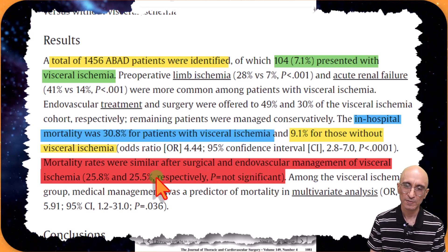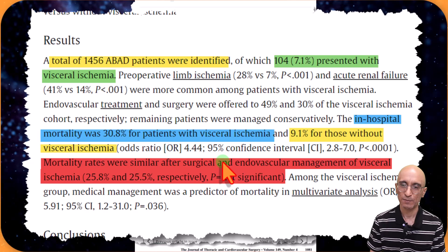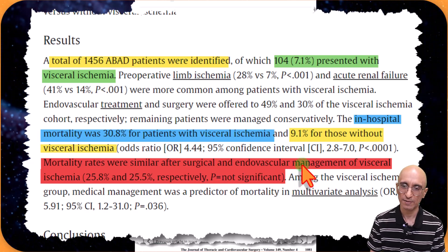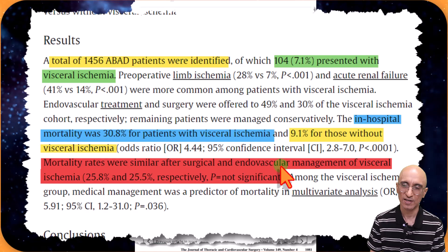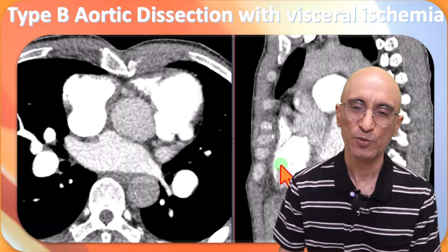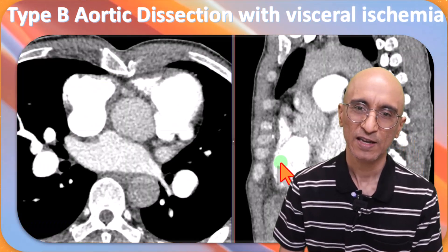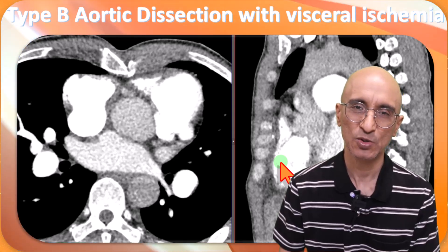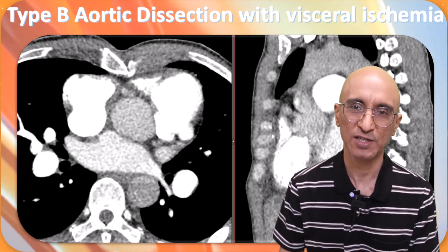In terms of management, these patients can be treated both surgically or with endovascular management, and there is no significant difference in outcome. I hope you found this rather unfortunate case of type B aortic dissection with visceral ischemia to be informative. Thanks for your attention.